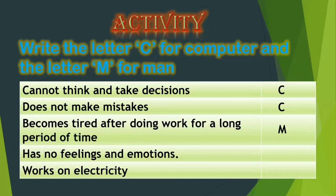The fourth one is: has no feelings and emotions. So who will not have any feelings, computer or man? It is computer, because computer is a machine. Machines will not have any feelings and emotions. The last one is: works on electricity. So which will work on electricity, man or a computer? Computer. You have to write letter C.